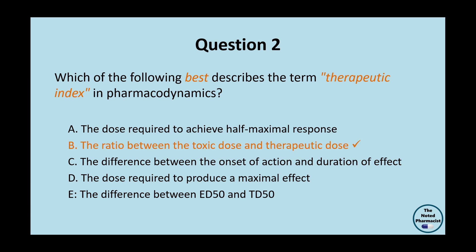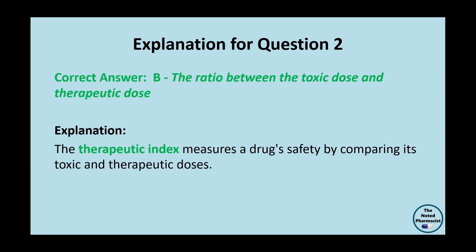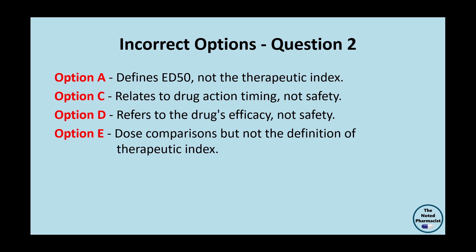The correct answer is Option B: the ratio between the toxic dose and the therapeutic dose. The therapeutic index is a measure that compares a drug's toxic dose to its therapeutic dose, providing an indicator of the drug's safety margin. Option A defines ED50, not the therapeutic index. Option C relates to the time course of drug action, not safety. Option D refers to the drug's efficacy, not safety. Option E — the difference between ED50 and TD50 — though it relates to dose comparisons, is not the correct definition of the therapeutic index. Understanding the therapeutic index is vital for assessing a drug's risk-to-benefit ratio.